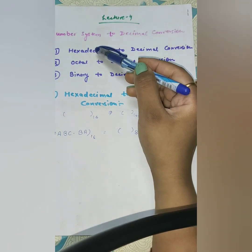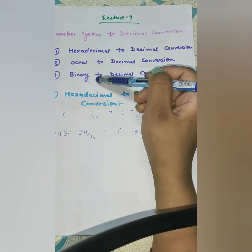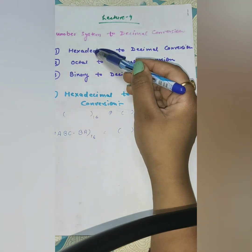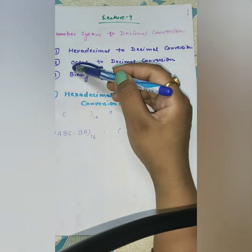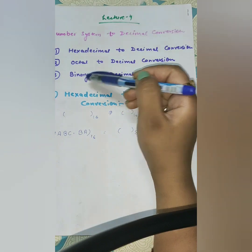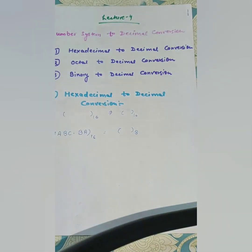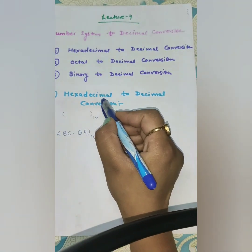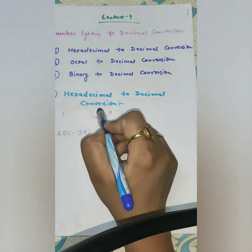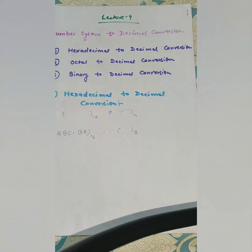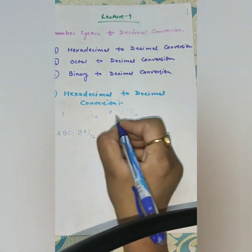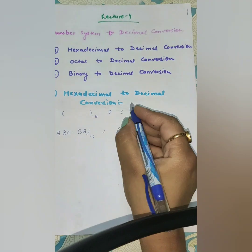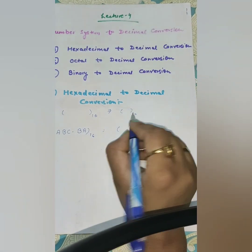We will convert three types of number systems: first is hexadecimal to decimal, octal to decimal, and binary to decimal. First we will cover hexadecimal to decimal conversion. The base of hexadecimal is 16 and the base of decimal is 10.